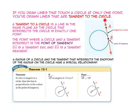Ray BA is a tangent ray, and segment BA is a tangent segment. A radius of a circle and the tangent that intersects the endpoint of the radius on the circle have a special relationship. If a line is tangent to a circle, then the line is perpendicular to the radius at the point of tangency. So radius OP is perpendicular to tangent AB.